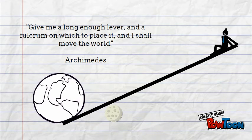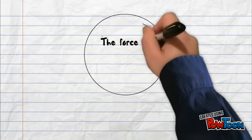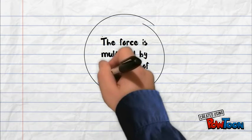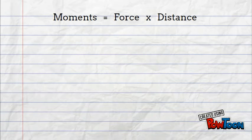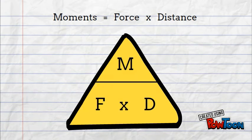But how do we calculate this? Well, it turns out that the force is multiplied by the length of the lever. So the equation is: moments equals force times distance. You can write this in one of these triangles — I'll put this slide on again at the end so you can write it down.